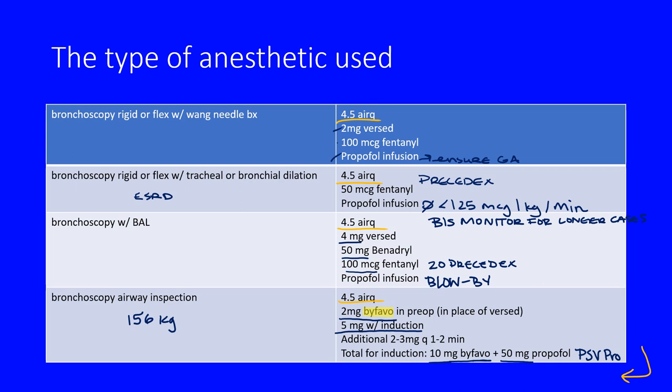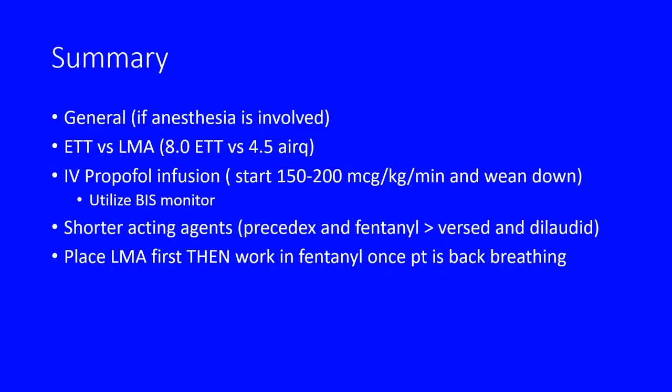Quick summary of the bronc cases: you can use an LMA or an ET tube — either an 8.0 ET tube or an air-q. We use air-q because it is resealable, unlike a standard LMA. Use larger sizes and verify with the surgeon what they need. We typically run IV propofol infusions for all of our bronc labs because it reduces the chances of awareness — you know you're providing an adequate anesthetic. With that in mind, make sure your IV is not questionable.